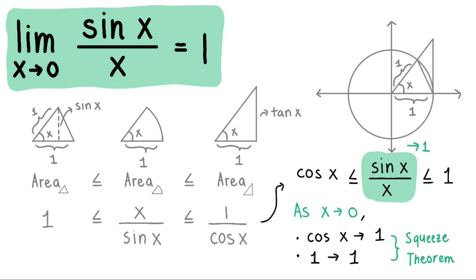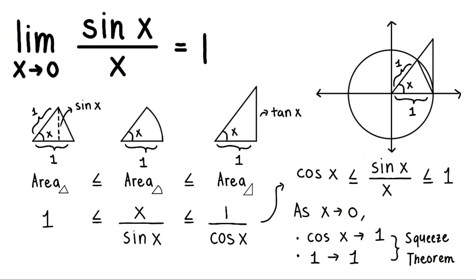As you can see, it's quite a lengthy process, but we can't obtain a nice result without first doing the hard work. That is the idea in math when proving certain things. The first special trigonometric limit is this one. Take note of the flow of the proof, starting from the area inequality through to applying the Squeeze Theorem.